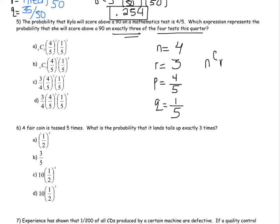So now all you have to do is use the formula. N, C, R, P to the R, Q to the N minus R. So what is my N? 4, C, 3 for R, P is 4 out of 5, R is 3, Q is 1 fifth, and 4 minus 3. So which one matches that? Pause the video. You should get A. A is the correct answer.